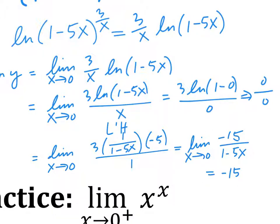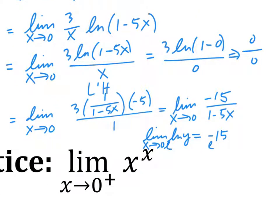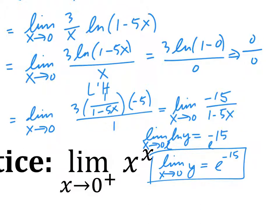Is negative 15 the answer? No. Remember, what we found is the limit of natural log y — we want the limit of y. We changed the problem to make it easier, but we need to undo that. Since limit of natural log y equals negative 15, we raise both sides by e. So the limit as x goes to 0 of y is e to the negative 15. That's why e appears in the answer — anytime you have something to a variable power, you'll need to bring it down with log and then exponentiate at the end.